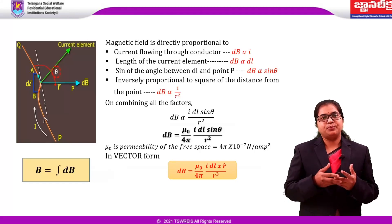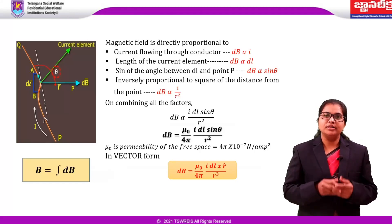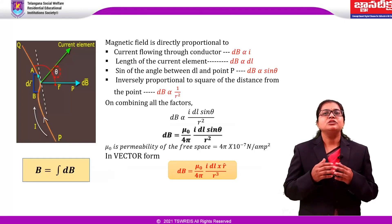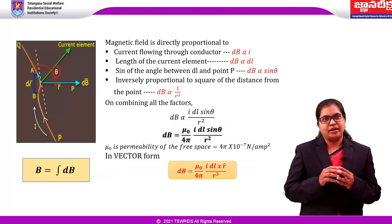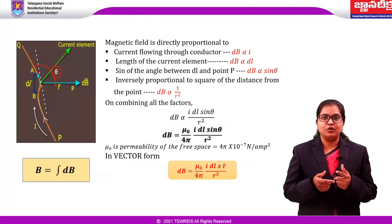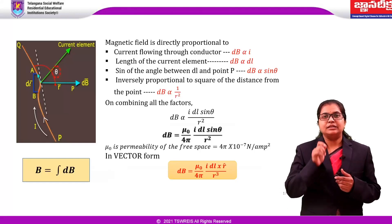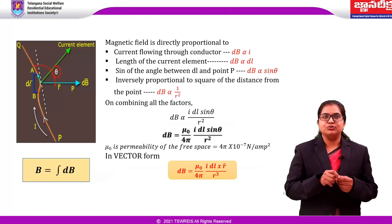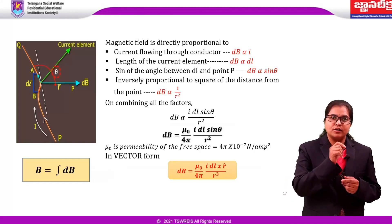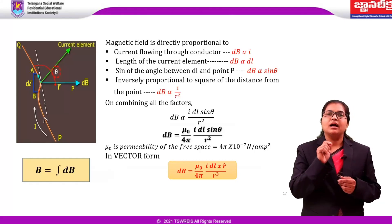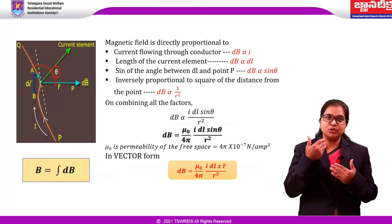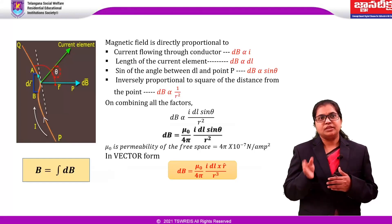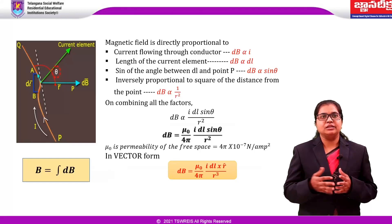On combining all these factors, dB is proportional to I dl sin θ / r². After removing the proportionality, we get the constant μ₀/4π. Then the magnetic induction dB equals μ₀/4π × I dl sin θ / r². Where μ₀ is the permeability of free space, equal to 4π × 10⁻⁷ Newton per ampere square. In vector form, the Biot-Savart law is dB equals μ₀/4π × I dl × r̂ / r³. To calculate the total magnetic field, we integrate: B equals ∫dB.